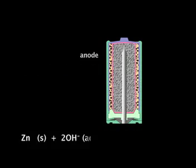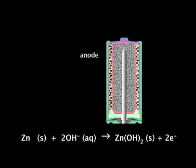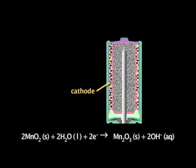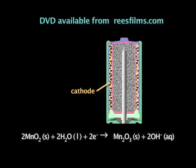The overall reaction can be written like this. At the cathode, manganese dioxide is reduced to a different manganese oxide, and the other product is hydroxide ions.